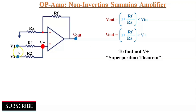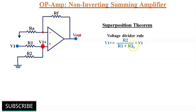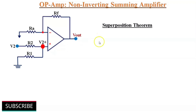We will consider one voltage source at a time to find the voltage at this node, then combine the individual responses to get the final response V+. Assume V1 is acting alone and V2 = 0. By using the voltage divider rule, V1+ = R2/(R1 + R2) multiplied by V1. Now assume V2 is acting alone and V1 = 0. By applying the voltage divider rule, V2+ = R1/(R1 + R2) multiplied by V2.